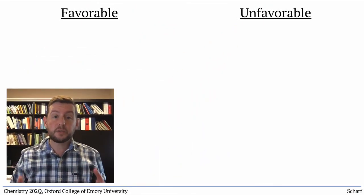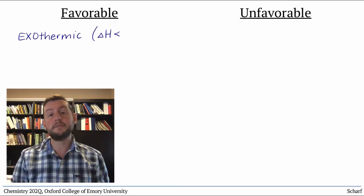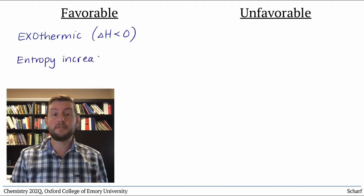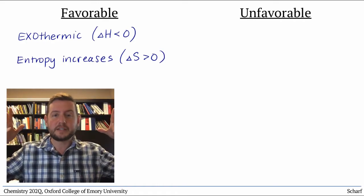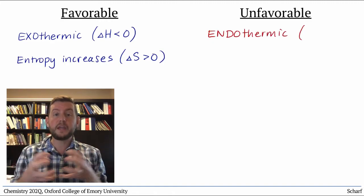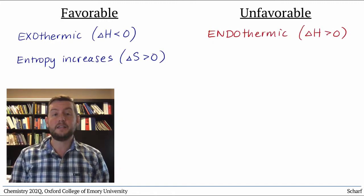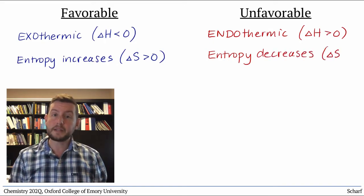In the last few videos, you've seen how enthalpy and entropy contribute to chemical reactivity. Exothermic processes release heat to their surroundings and are enthalpically favorable. Entropically favorable processes increase the entropy or disorder of the system. On the other hand, endothermic processes absorb heat from their surroundings and are not enthalpically favorable, and processes that decrease the entropy of a system are entropically unfavorable.